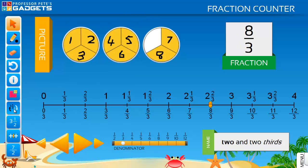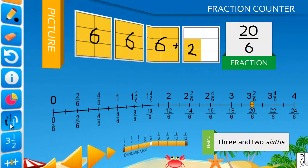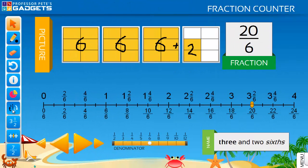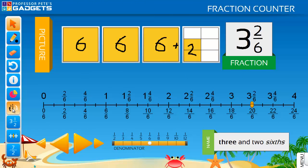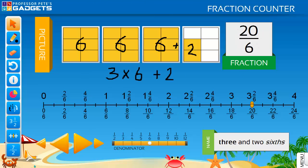After a few examples of this in one class, a student was heard to say, I know a shortcut! It's easy! Just multiply the whole number by the denominator and add the numerator. Yes, students can work out their own formula.